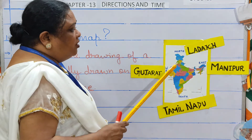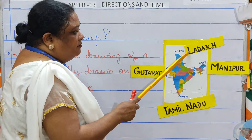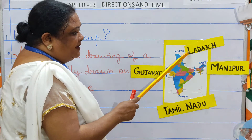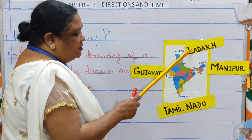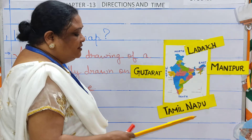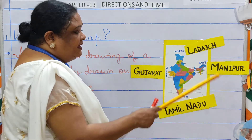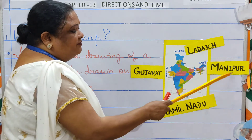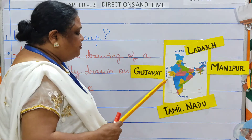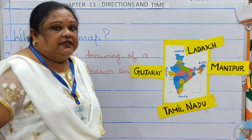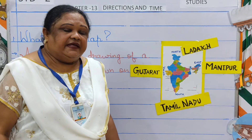To the north we have Ladakh. To the south we have Tamil Nadu. To the east we have Manipur, and to the west we have Gujarat. These are all states which lie in the different directions.